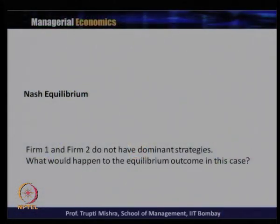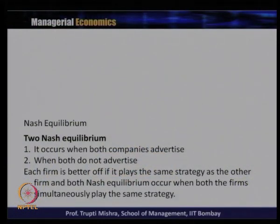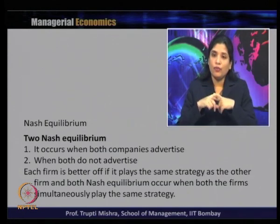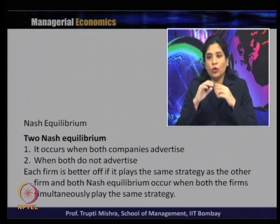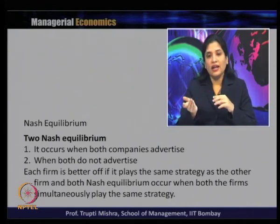How should we find the equilibrium output, or whether it is possible to get Nash equilibrium here? We have analyzed a situation where firm 1 and firm 2 do not have dominant strategies. What would happen to the equilibrium output in this case? Here we will get two Nash equilibria — we will not get a single Nash equilibrium for the entire situation. One Nash equilibrium occurs when both companies advertise, and when firm 1 and firm 2 are both advertising, we get one Nash equilibrium.